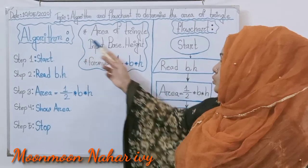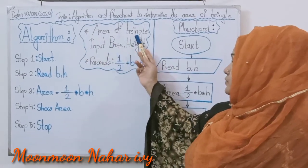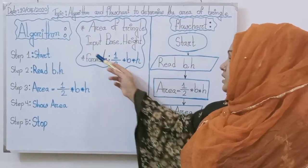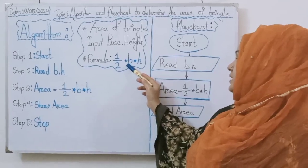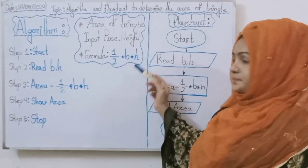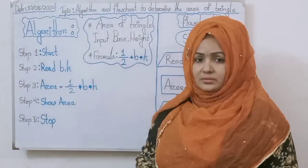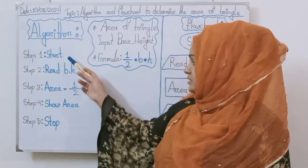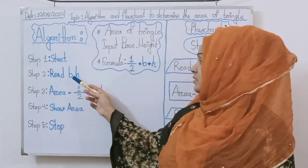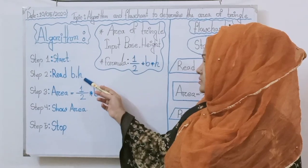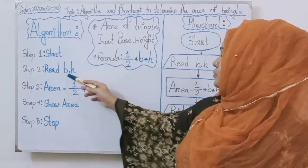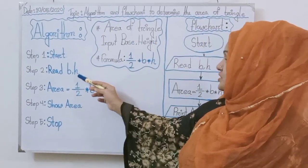In this algorithm, we need the area of triangle. The input is base and height, and the formula is half into base into height. Step 1: Start. Step 2: Read base and height — base for B, height for H.